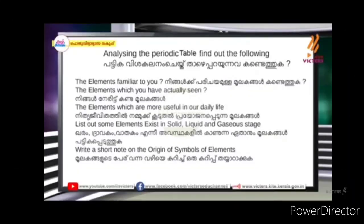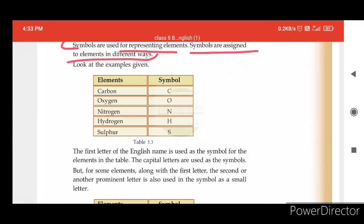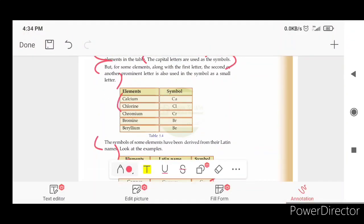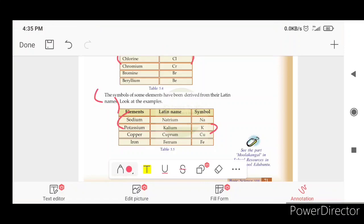Write a short note on the origin of symbols of elements. Symbols are assigned to elements in different ways. The first letter of the English name is used as a symbol, written as a capital letter. When two elements share the same first letter, the second letter is used as a small letter. For example, calcium and chlorine. The third rule is that some symbols are derived from their Latin names — sodium, potassium, natrium, kalium.